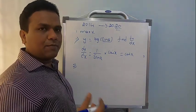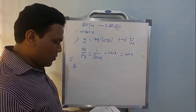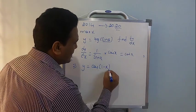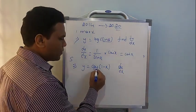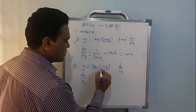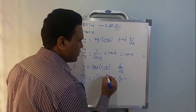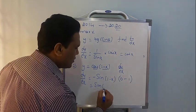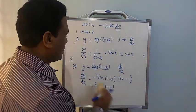In the 2014 supplementary examination, the problem was: if y = cos(1 − x), find dy/dx. Differentiating: dy/dx = −sin(1 − x) × (−1) = +sin(1 − x). Notice the minus sign here — minus into minus gives plus.